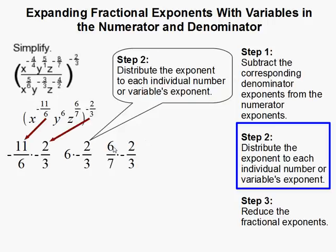So when we distribute, that means we're going to multiply. Remember, when you raise a power to a power, you multiply them. So negative 11 over 6 times negative 2 thirds, 6 times negative 2 thirds, and 6 sevenths times negative 2 thirds.